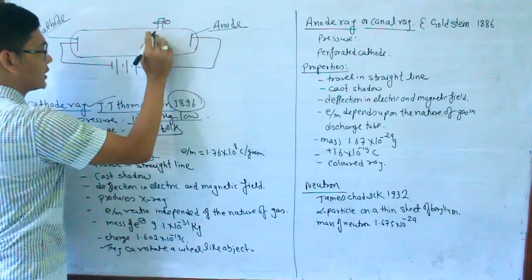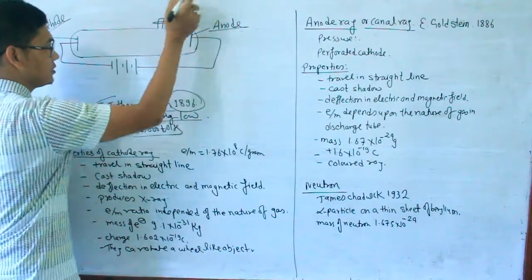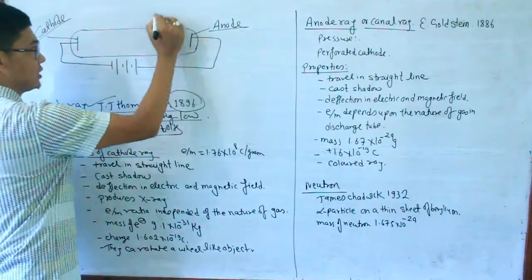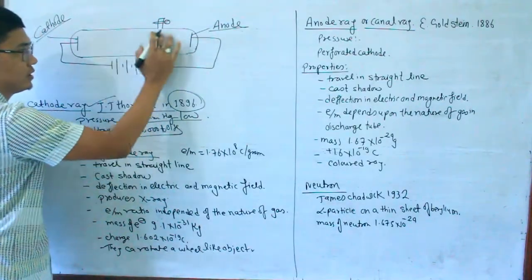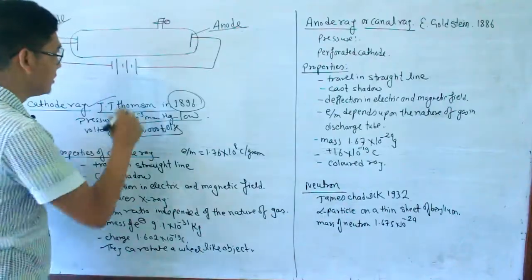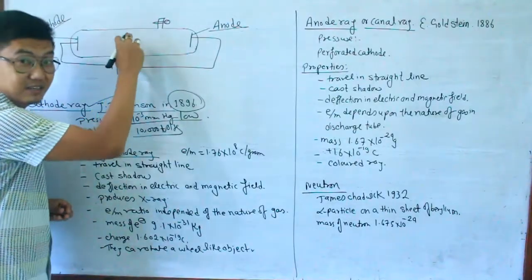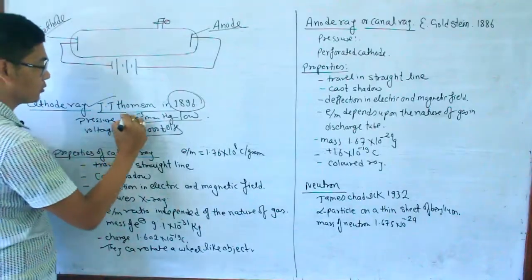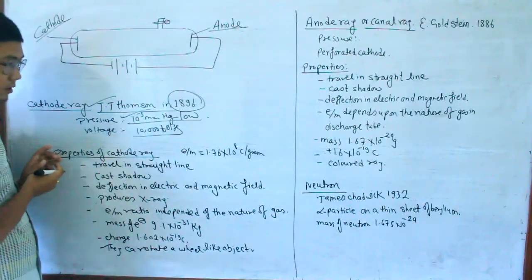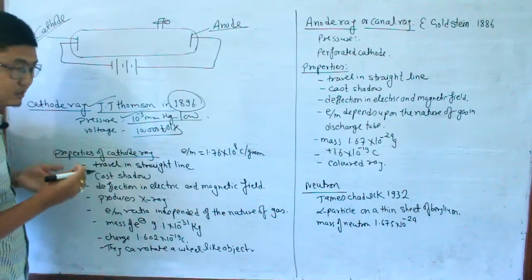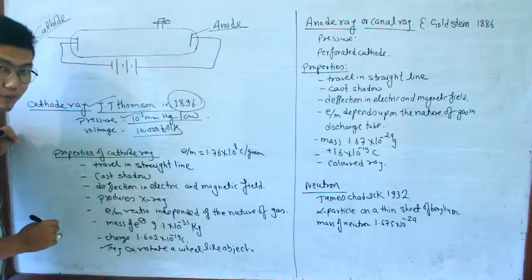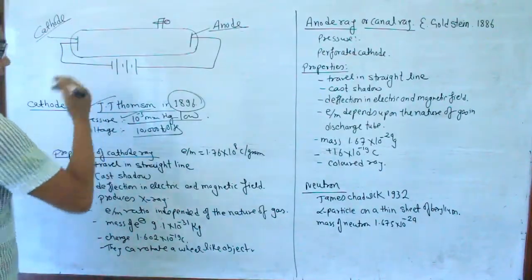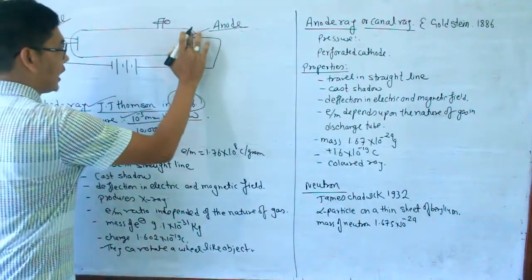We use a pump to remove the air, creating a vacuum. The air is replaced, creating vacuum conditions. The pressure is 10 to the power minus 3 mmHg; normal pressure is 760 mmHg — so this is very low pressure. Then high voltage is applied.